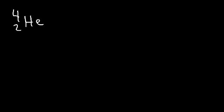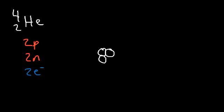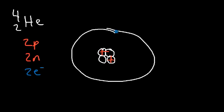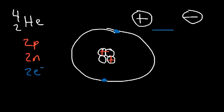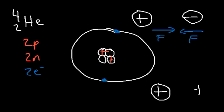Helium has two protons, two neutrons, and as a neutral atom it has two electrons. If we draw the atomic structure of helium, we have two protons with a positive charge and two neutrons at the center, surrounded by two electrons. Opposite charges attract — they feel a force of attraction that pulls them together. Like charges repel — they feel a force that pushes them apart, known as the electric force.